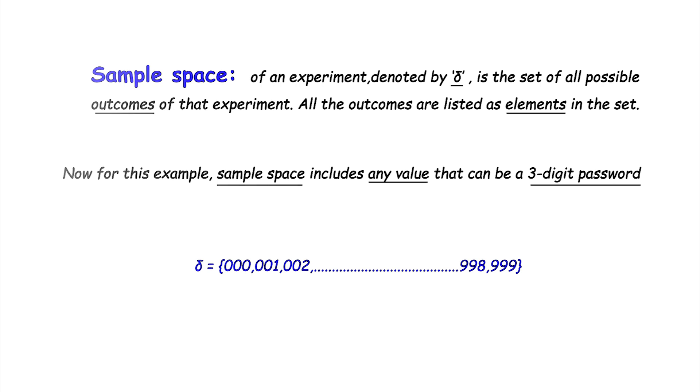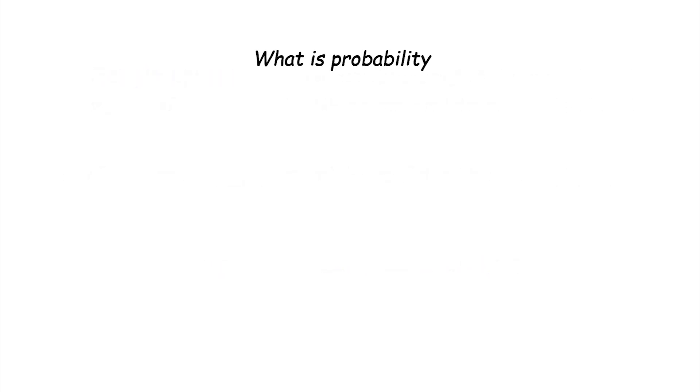Before understanding what is probability, let us understand what favorable outcomes and total outcomes are. Favorable outcome is the outcome in which we are interested. Total outcomes are all of the outcomes of an experiment.